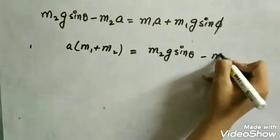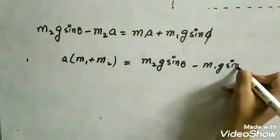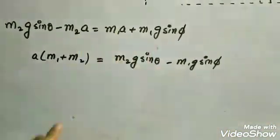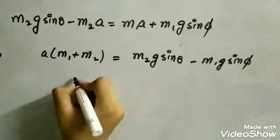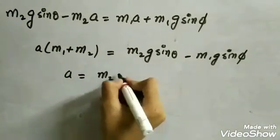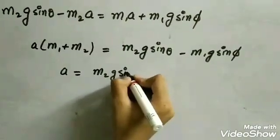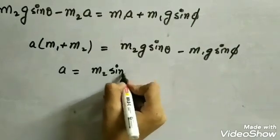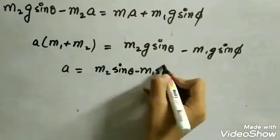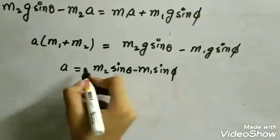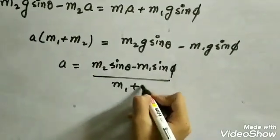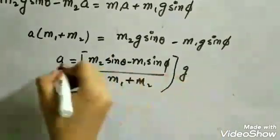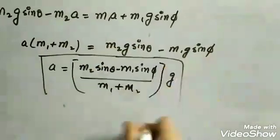On simplification we get a(m1 + m2) = m2g sin theta minus m1g sin phi. Note that these are two different angles, which is why we cannot factor out g sin theta from both terms. This gives us the acceleration: a = g(m2 sin theta minus m1 sin phi) divided by (m1 + m2). This is the required value of the acceleration.